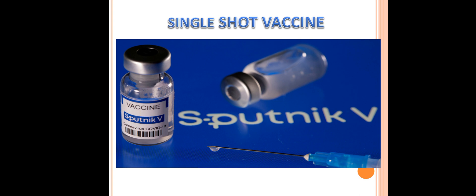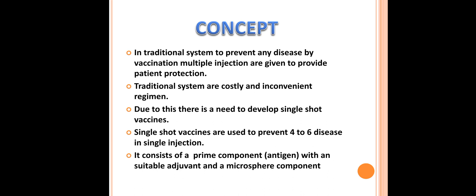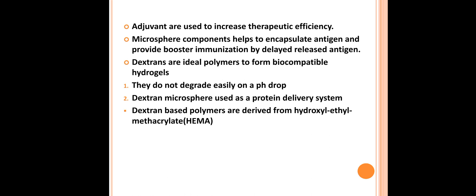Now let's begin with the topic of single shot vaccine. The concept is to prevent disease by vaccination using only a single dose instead of multiple injections as in traditional systems. Single shot vaccines can prevent four to six diseases in a single dose. The main concept is to reduce multiple dosing by including a prime component — the main antigen with a suitable adjuvant — and a microsphere component to eliminate the need for prime and booster doses. Adjuvants increase therapeutic efficiency, while microsphere components encapsulate the antigen and provide booster immunization through delayed antigen release.